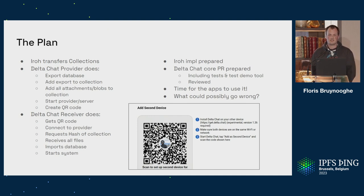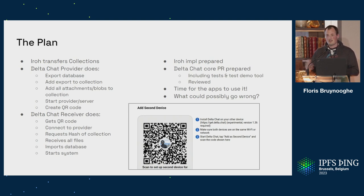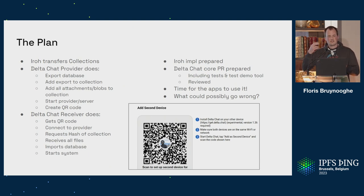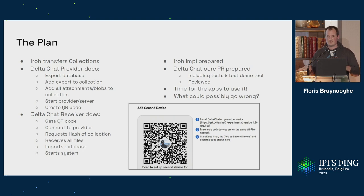The receiver side is basically the opposite: it gets a QR code, connects to the provider, requests the hash, the verified streaming happens, all the files arrive. At the end you need to import the database into the SQLite system and restart. On the provider side, Delta Chat has to be careful not to modify files during this, so it tries to stop the system — no files should be modified otherwise we get hash changes.